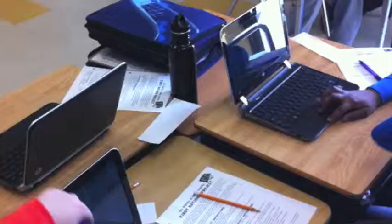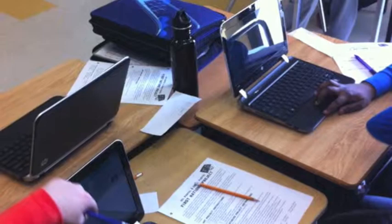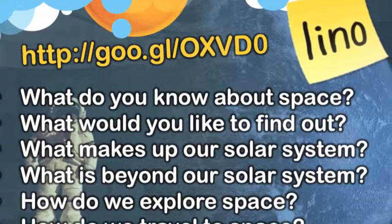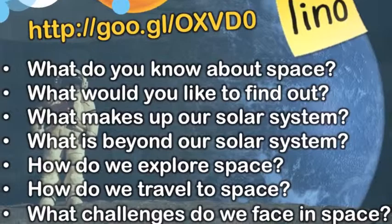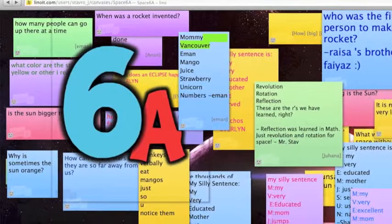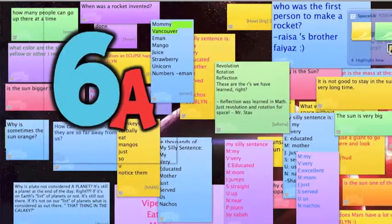We then went to the laptops and used Lino-It. I showed the kids how to add stickies and gave them prompts on the PowerPoint — what they knew, what they wanted to know, and interesting things they thought the class should know. I said, put your thoughts about space on the Lino board. This thing filled up quick. The kids really took to it and there were so many questions. That gave me a great diagnostic of where the kids' heads were at and what they wanted to know, so I could modify my whole unit to answer their questions.